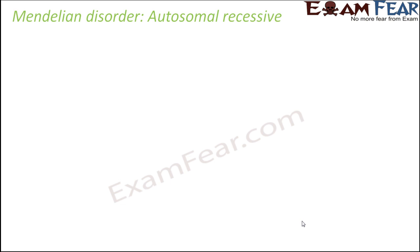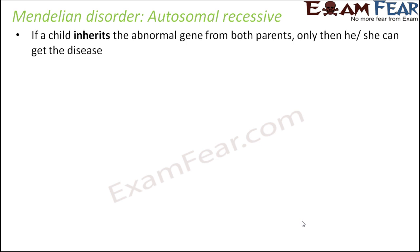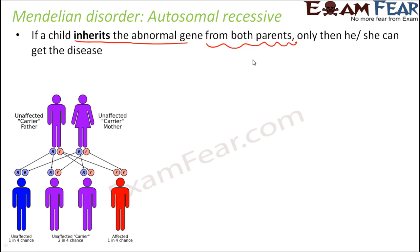The type of Mendelian disorder we are discussing is autosomal recessive disorder. This is also autosomal, meaning it gets transmitted through the autosome and is independent of gender. But in this case, a child gets the disease only if he or she inherits the abnormal gene from both parents. So only under a recessive condition will a child have the disease.